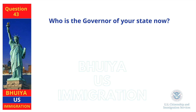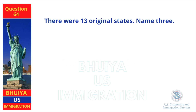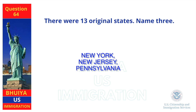Who is the governor of your state now? This answer will vary. There were 13 original states — name three. New York, New Jersey, Pennsylvania.